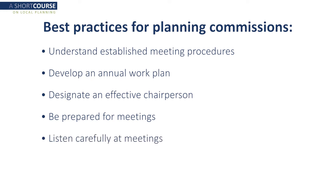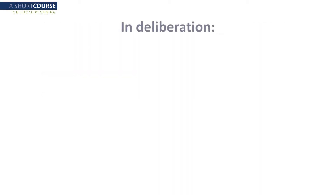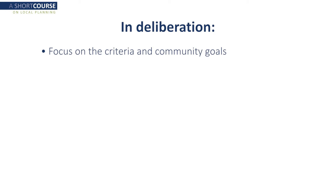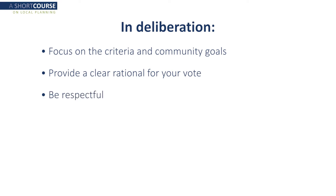When listening to the public or other planning commissioners, be calm, be polite, and be patient. When deliberating, focus on adopted decision criteria and keep long-term community goals in mind as well as the issues presented during the hearing. Speak in clear terms and provide a rationale for your vote. Treat commissioners who may not agree with you with civic respect. Finally, remember that planning issues enliven all kinds of emotions in people, so don't take things too personally.